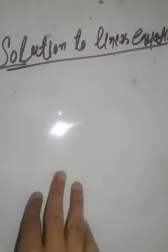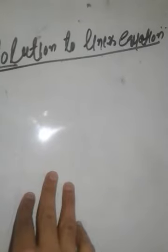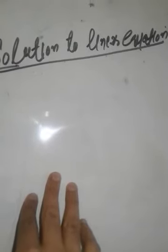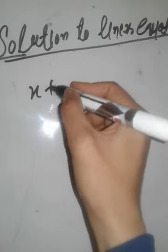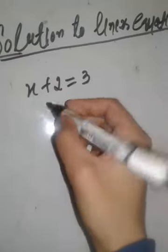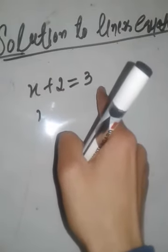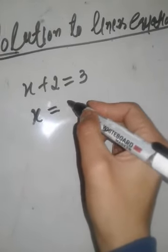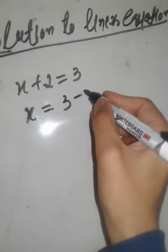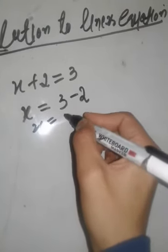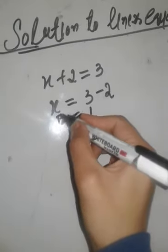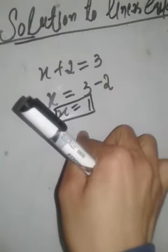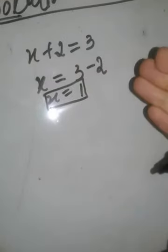Assalamu alaikum dear students. Today we will discuss the solutions of a linear equation in one variable and in two variables. For example, if you have a linear equation x plus 2 equals 3, to find the solution, we do it this way: transfer the 2, so x equals 3 minus 2, which equals 1. This is the solution of the linear equation.